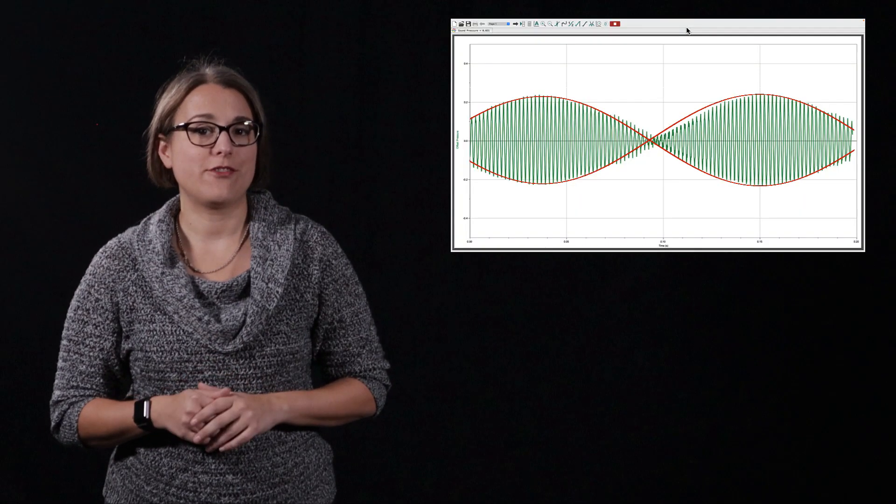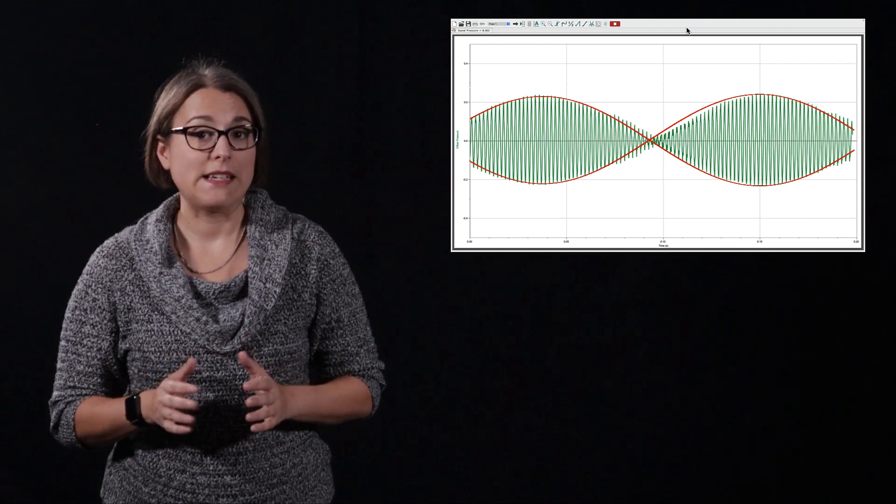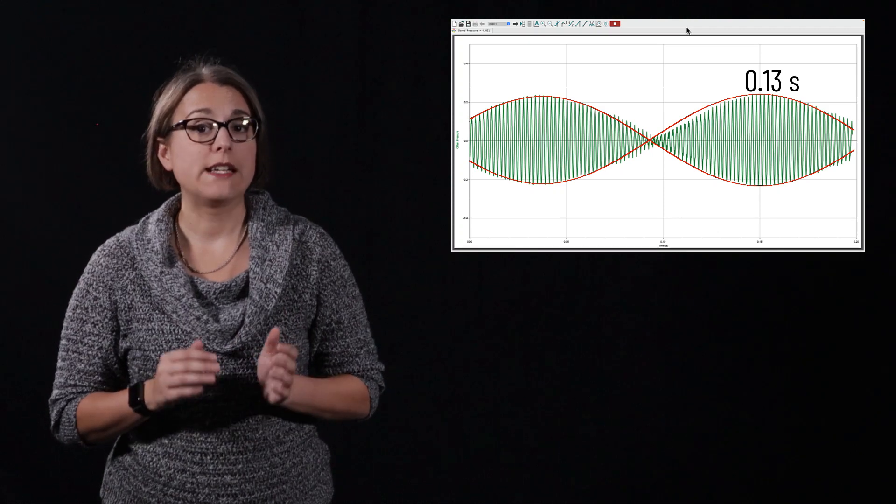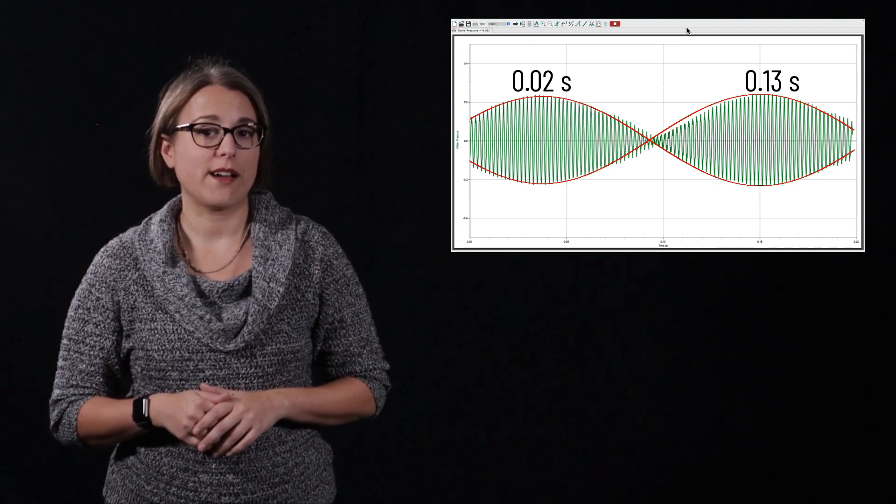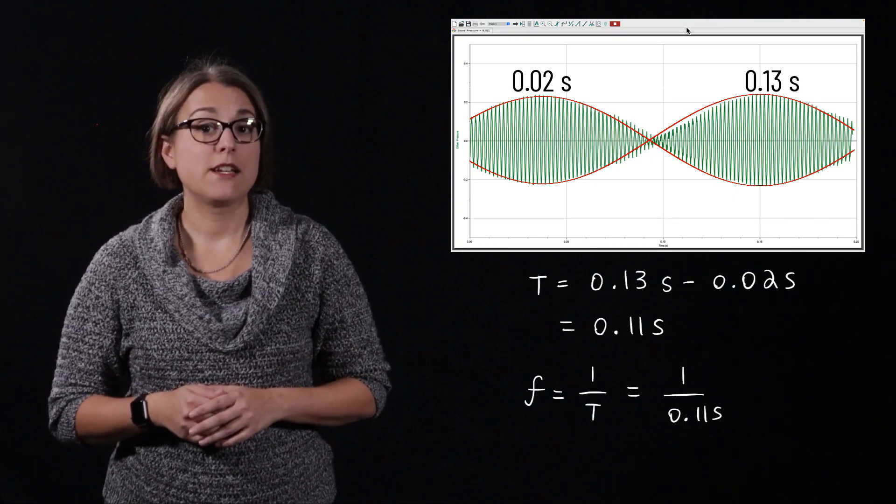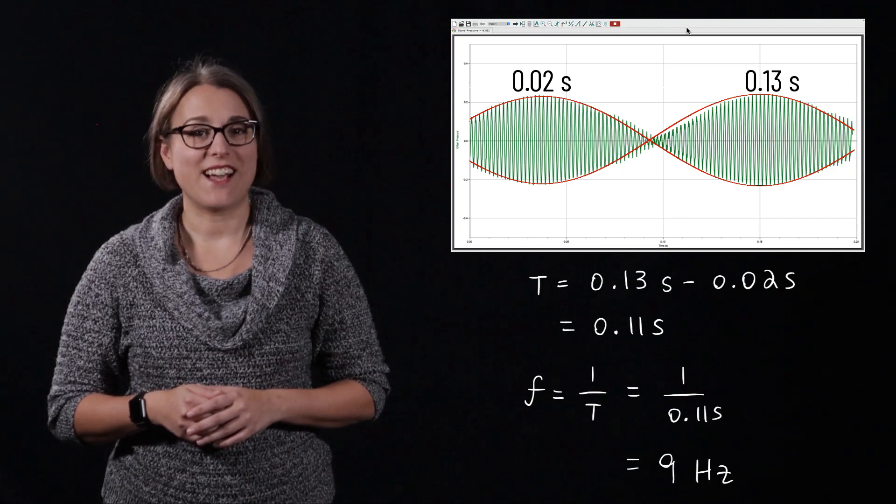We can verify this answer by looking at the amount of time between two peaks on the beat and converting that to a frequency. One crest occurs at 0.13 seconds and the other at 0.02 seconds. The period of the beat is therefore 0.11 seconds. Frequency is equal to 1 divided by period, in this case, 9 Hz.